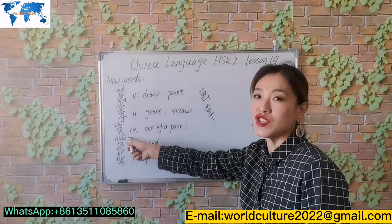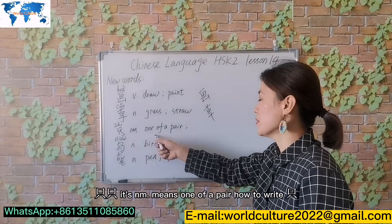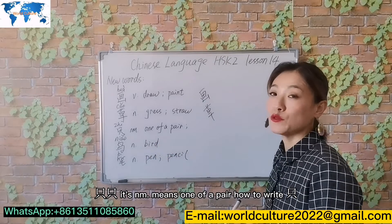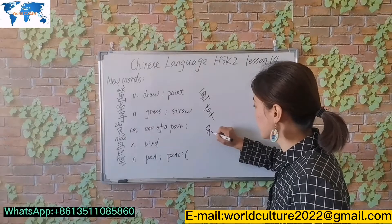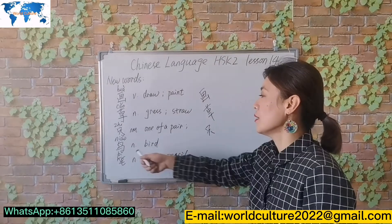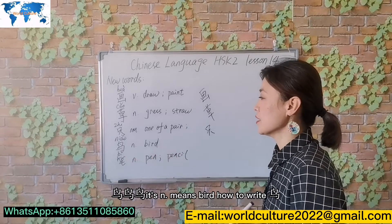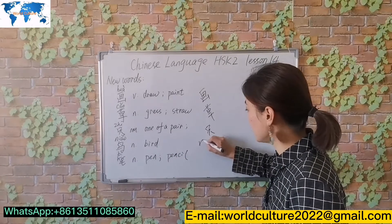只. It's a number word, means 'one of a pair'. How to write 只. 鸟. It means 'bird'. How to write 鸟.